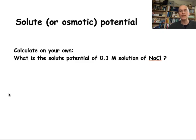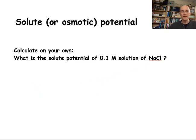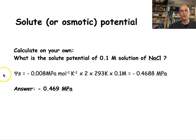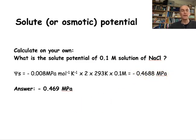Now calculate on your own: find the solute potential for a 0.1 molar solution of sodium chloride at 20°C. Here is the solution: using the same equation, i equals 2 (since NaCl dissociates into sodium and chloride), T equals 293 K, and Cs equals 0.1 molar, giving the solute potential in megapascals.